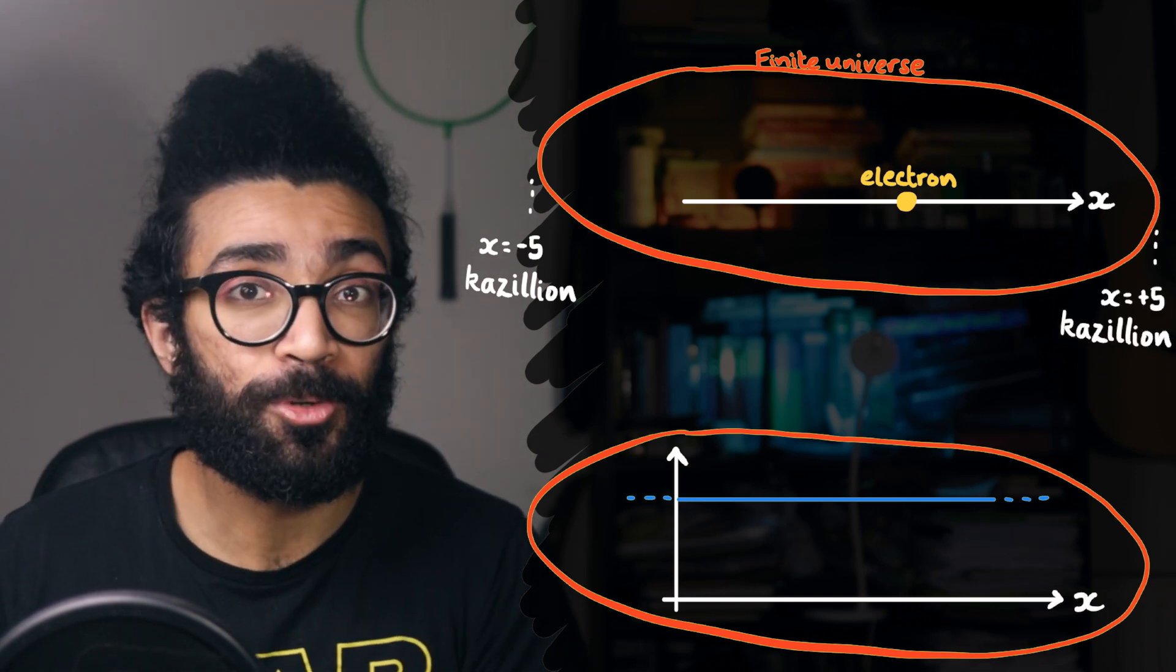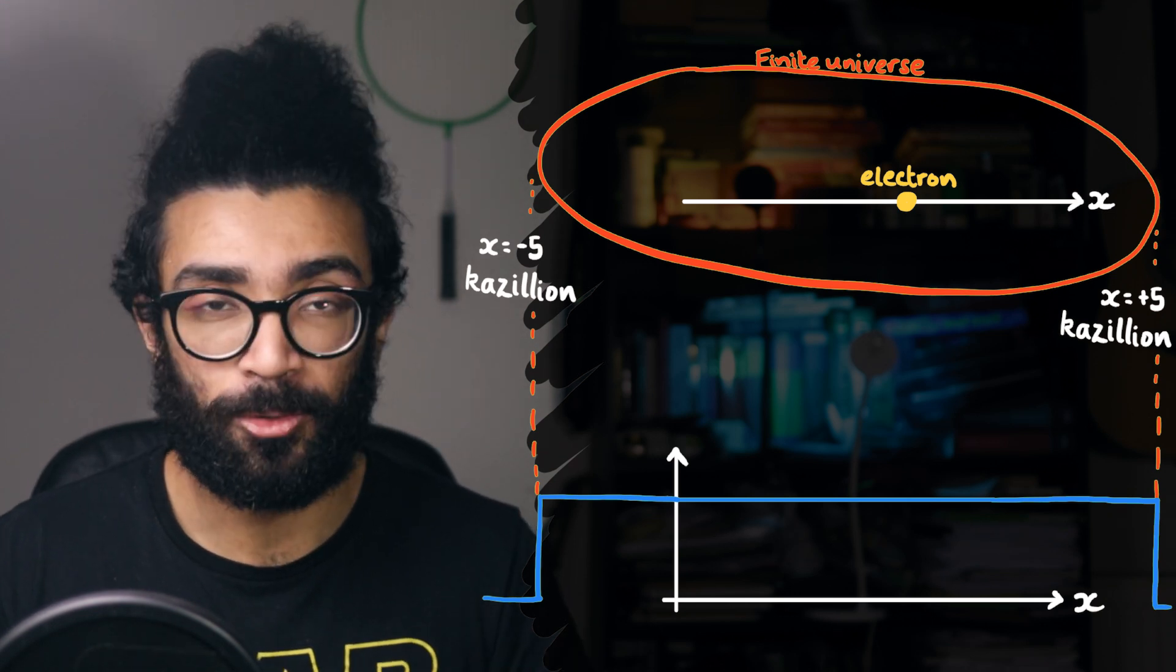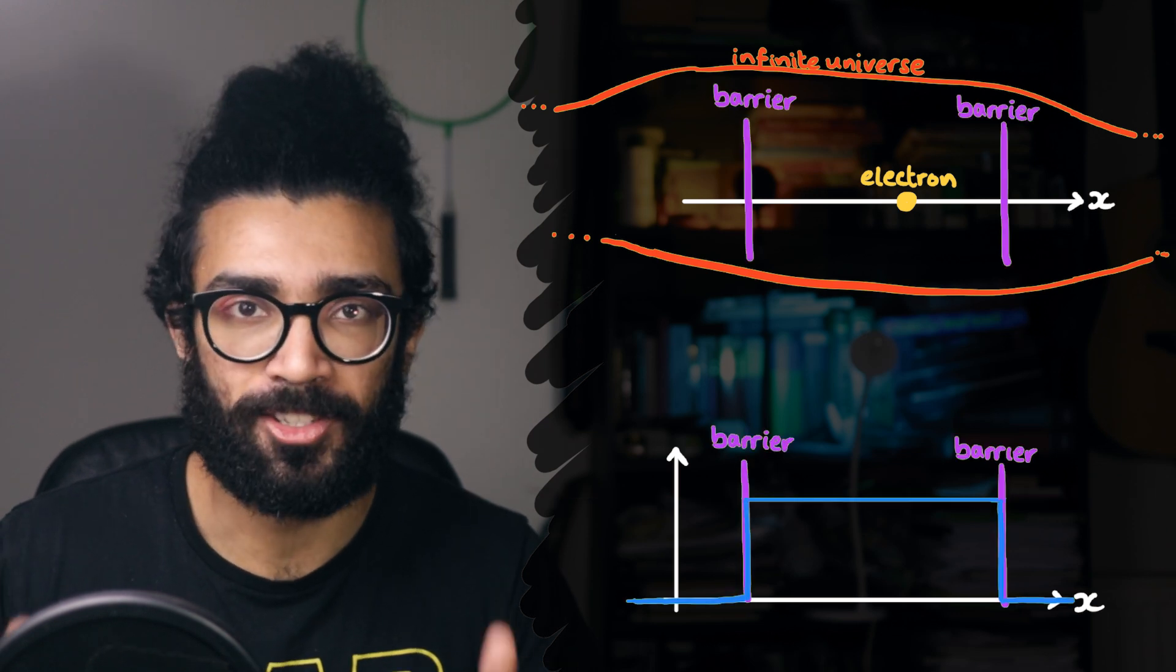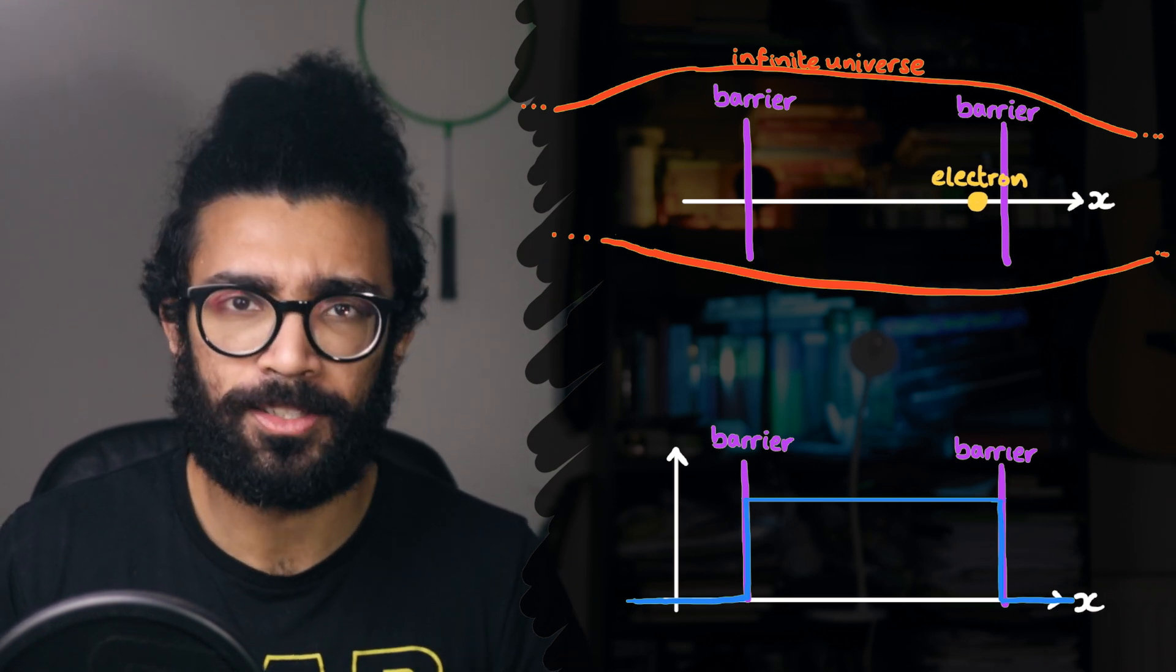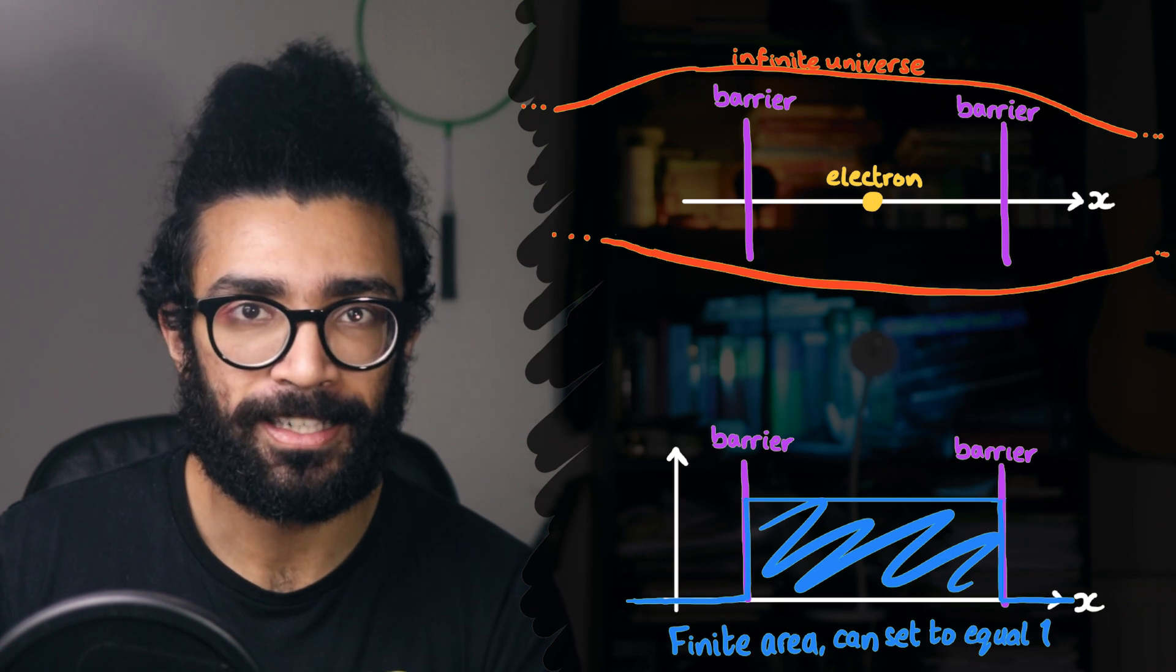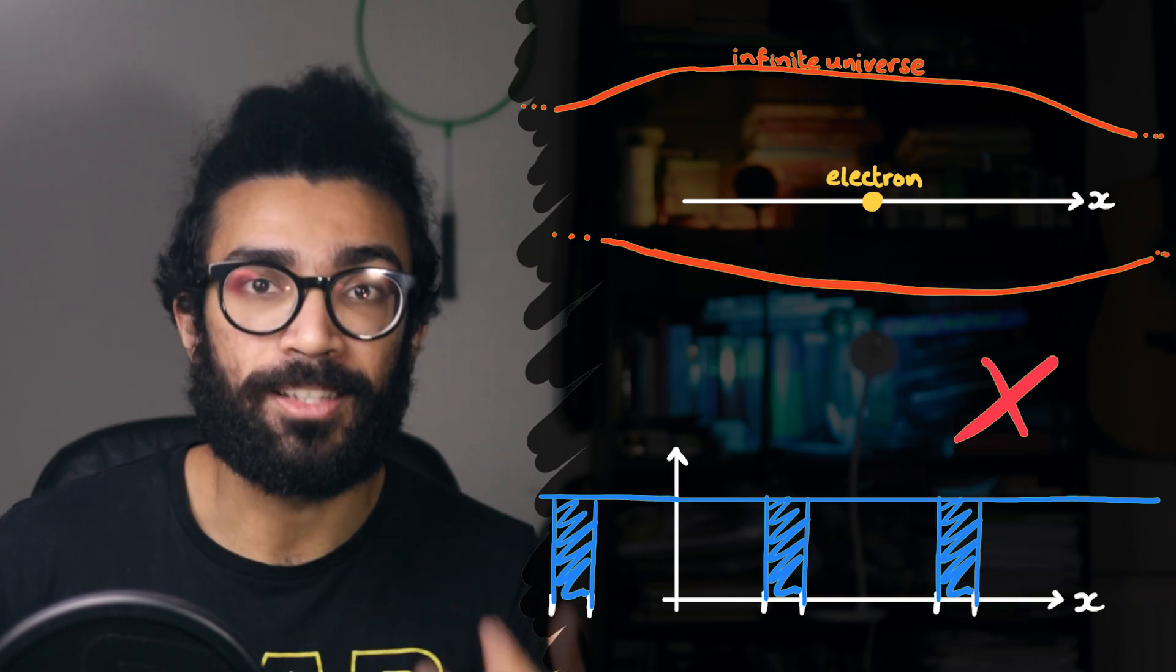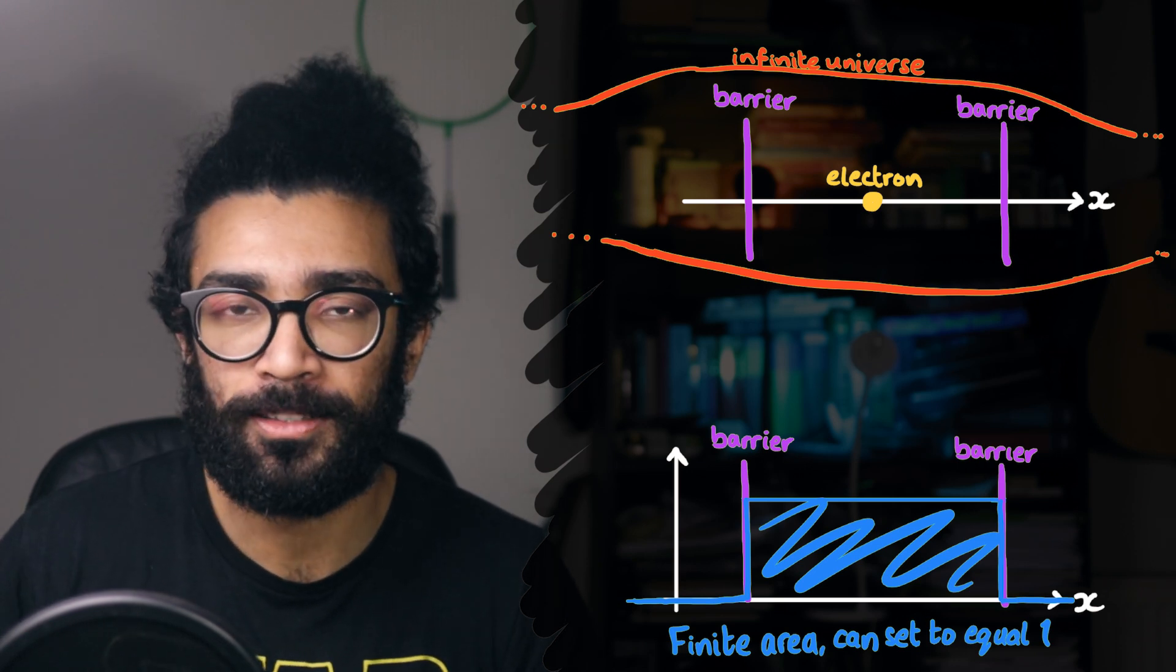Either we say that the universe is actually finite, so it does have edges, whether that's at x is equal to negative 5 kazillion and positive 5 kazillion, or some other value. And at those points, we say that the wave function drops to zero because our electron cannot be found outside our universe. But within our universe, there's an equal probability of finding it anywhere, because apparently in this universe there's nothing else other than the electron. Or we could assume that the universe is infinite, and then there's something at some point that causes the wave function to fall off to zero. Some sort of barrier at both ends that our electron cannot penetrate, allowing us to make the area underneath our wave function squared graph equal to 1.